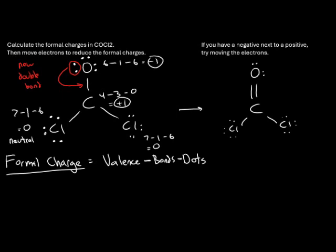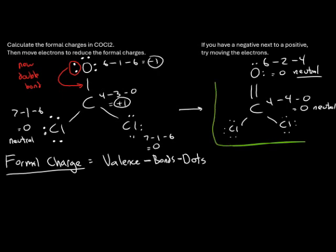Let's recalculate the formal charges with the double bond. Oxygen is still valence six, but now has two bonds and four dots: six minus two minus four gives zero — oxygen is now neutral. Carbon has a valence of four, now has four bonds (the double bond counts as two), and zero dots: four minus four minus zero gives zero — carbon is neutral too. This second structure with zero formal charge all the way around is more stable and is the correct Lewis structure.